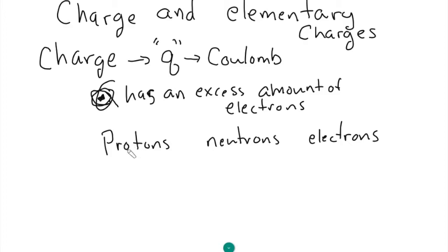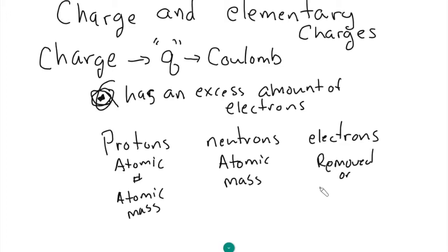They each have their own specific responsibility in the atom. For example, the proton is the atomic number and it also factors into the atomic mass. The neutron also factors into atomic mass and those are the two things located in the nucleus. But outside these electrons here, these can be removed or gained from the atom. And this remove or gain from an atom is what makes objects become charged.